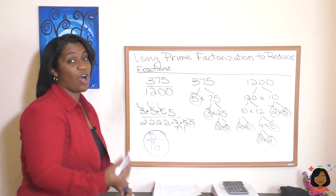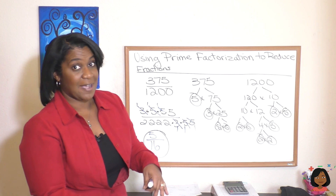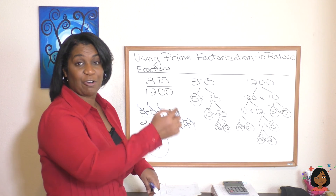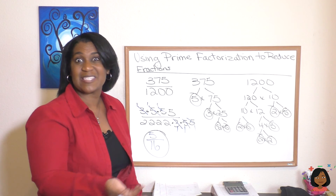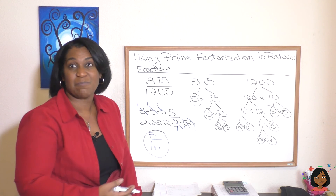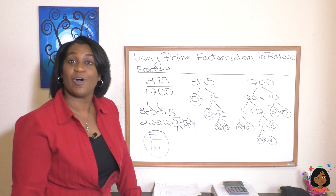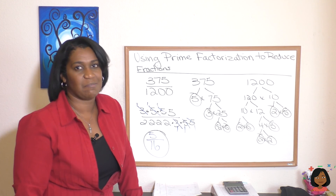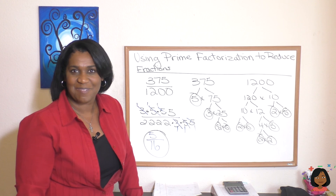So you see, all we did is prime factor the top, prime factor the bottom, put them over each other, and crossed out things that were equivalent to 1. It just makes it a whole lot easier to find ways to simplify really large numbers. That's it for me today — try the practice problems to make sure you've got it. I'll see you next time. Bye-bye.